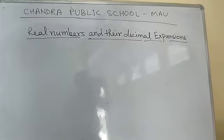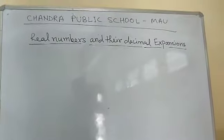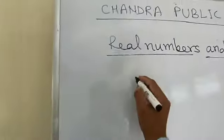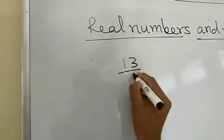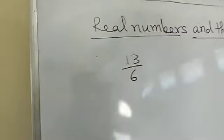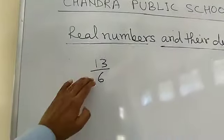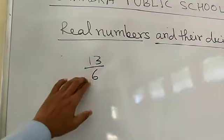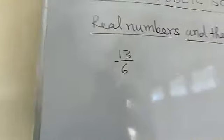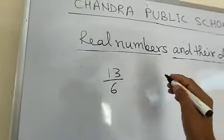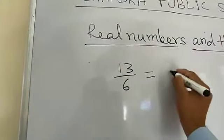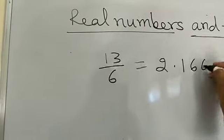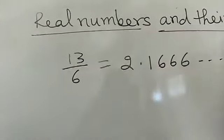Now I am going to explain real numbers and their decimal expansions. Suppose I take the rational number 13 by 6 — it is in the form of P by Q. If I find the decimal value of 13 by 6 and divide 13 by 6, I will get 2.1666 and so on.